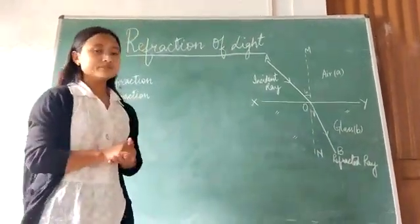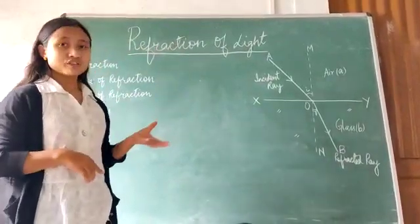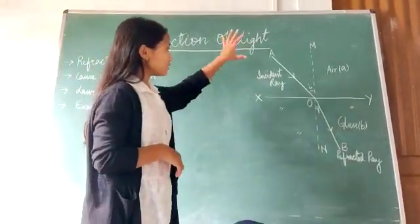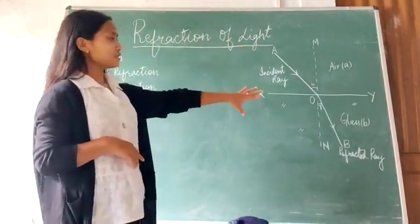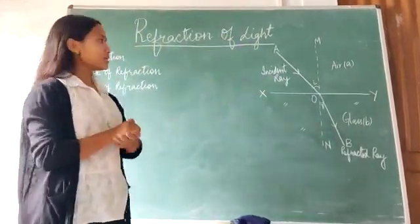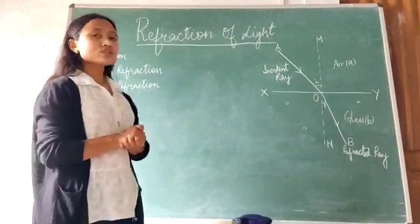So this phenomenon, or this deviation of light, as it passes from this original path, it passes through this surface, we separate these two media. This is called refraction.